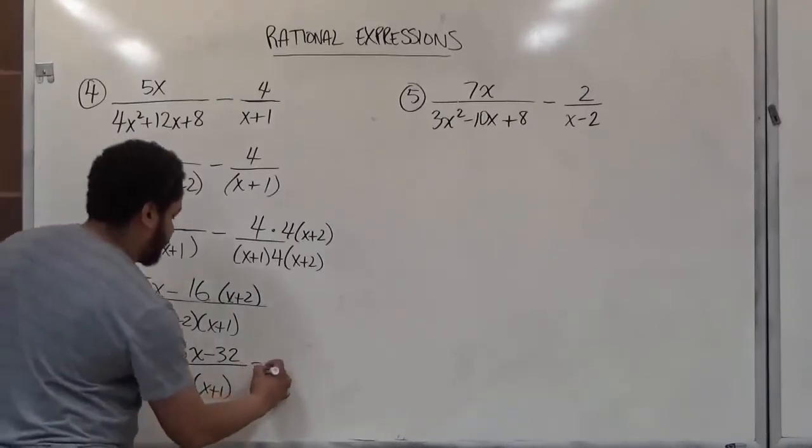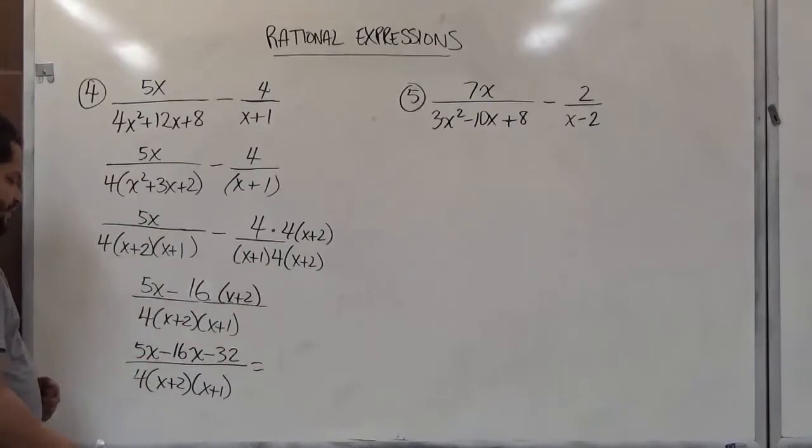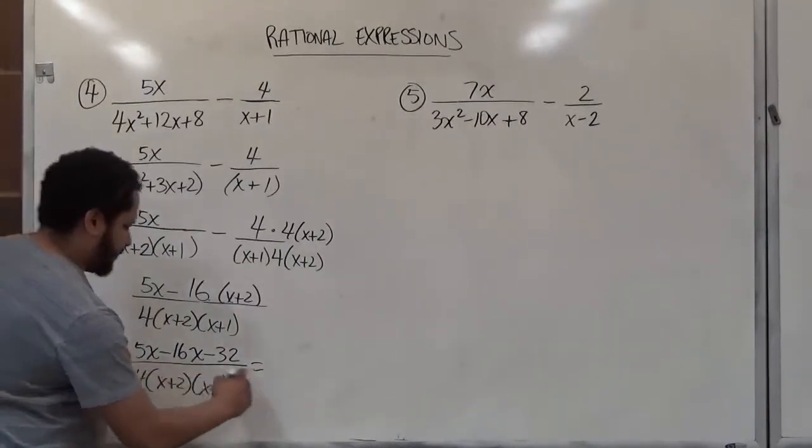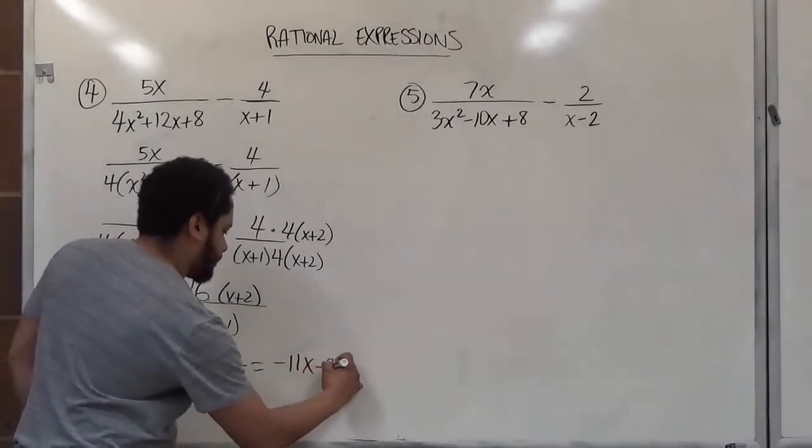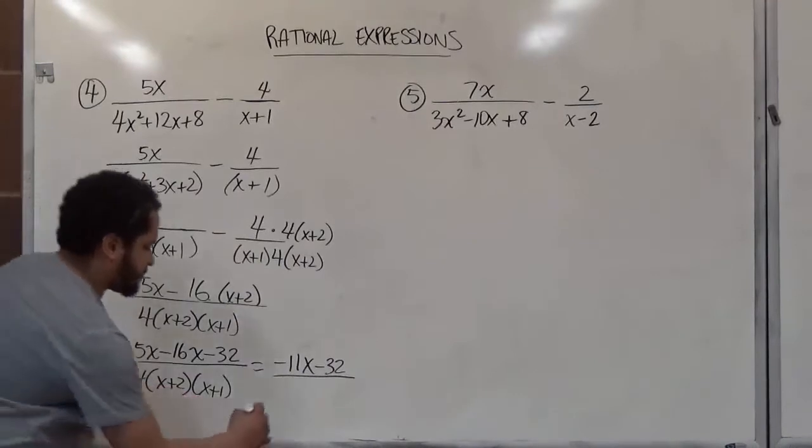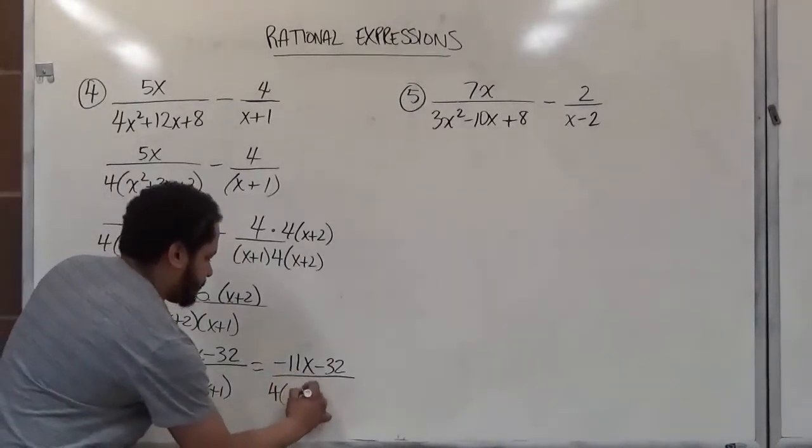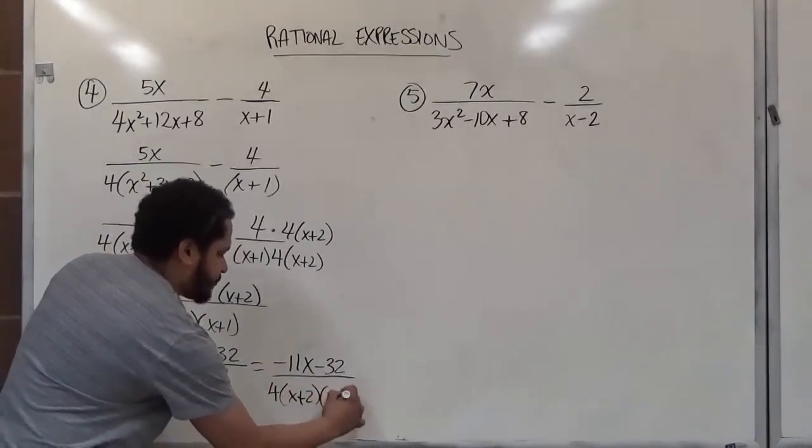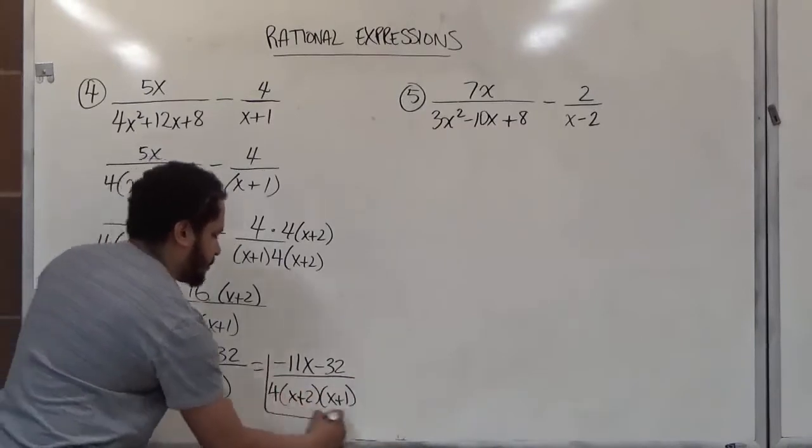And finally our final result for this is going to be negative 11x minus 32 over 4 times x plus 2 times x plus 1. There's our solution for this one.